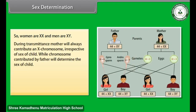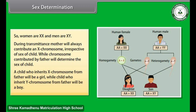During transmission, the mother will always contribute an X chromosome irrespective of the sex of the child, while the chromosome contributed by the father will determine the sex of the child. A child who inherits an X chromosome from the father will be a girl, while the child who inherits a Y chromosome from the father will be a boy.